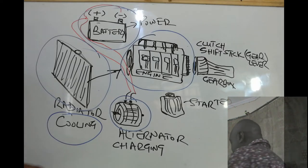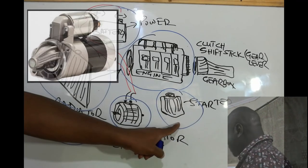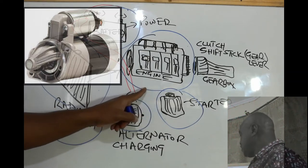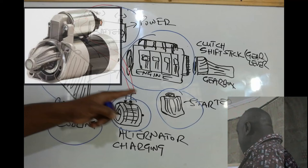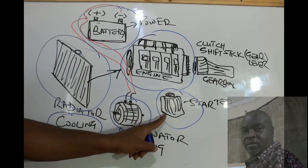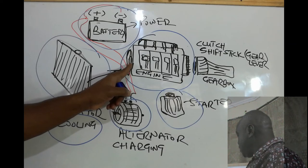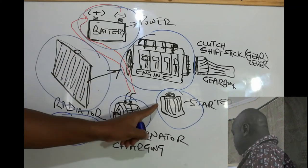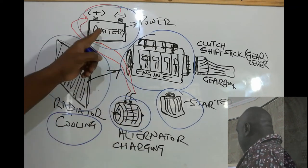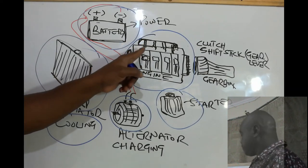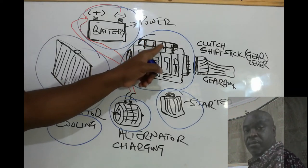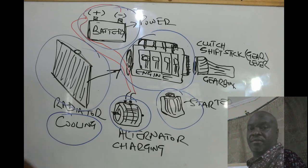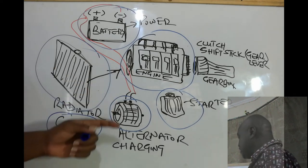The starter is used to initiate the process of starting the engine. Once you start your car, the battery provides power to the starter, and the starter rotates the engine. At the same time, the battery also provides power to the spark plugs which initiate the combustion process. During that concurrent process, the engine fires up and starts running.